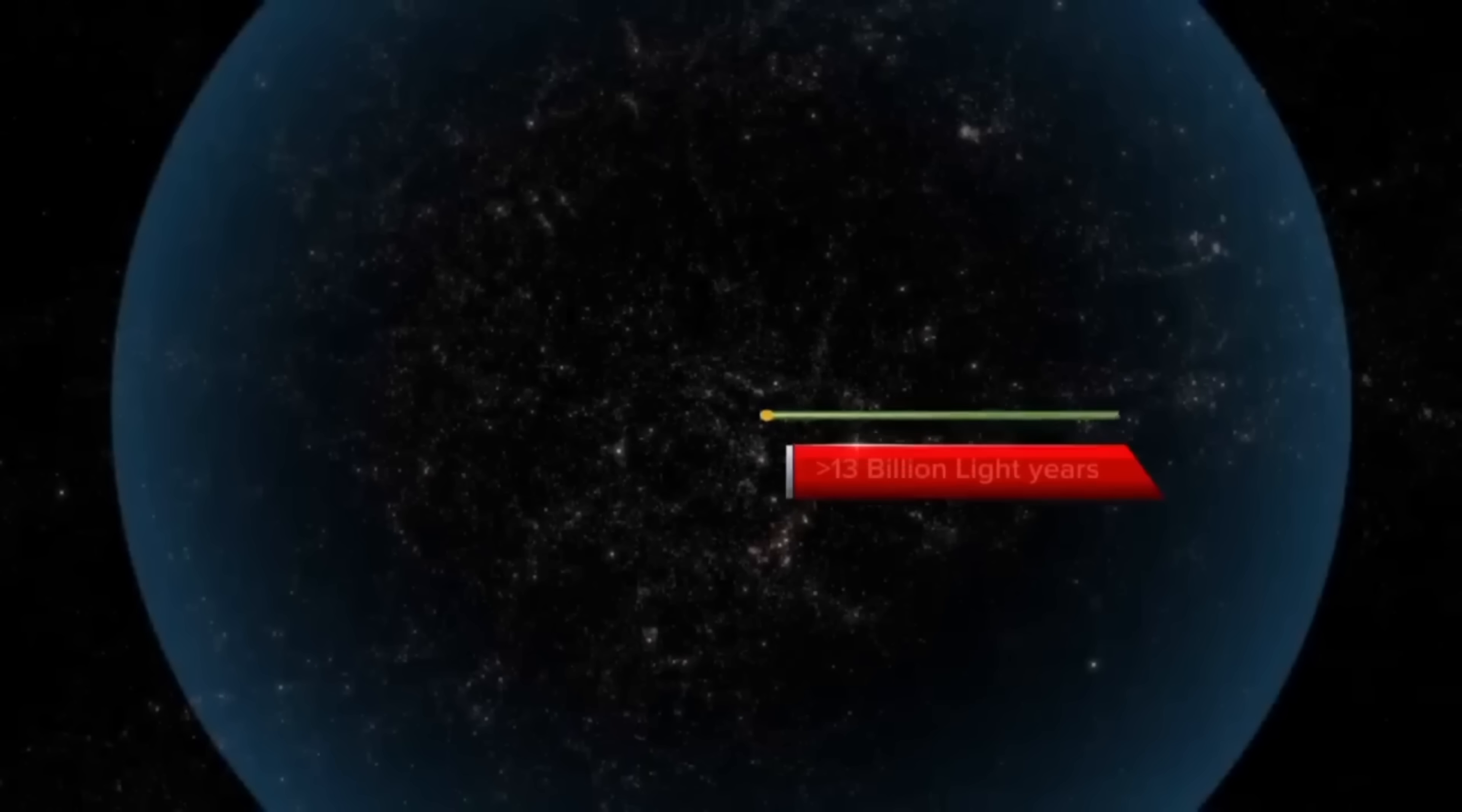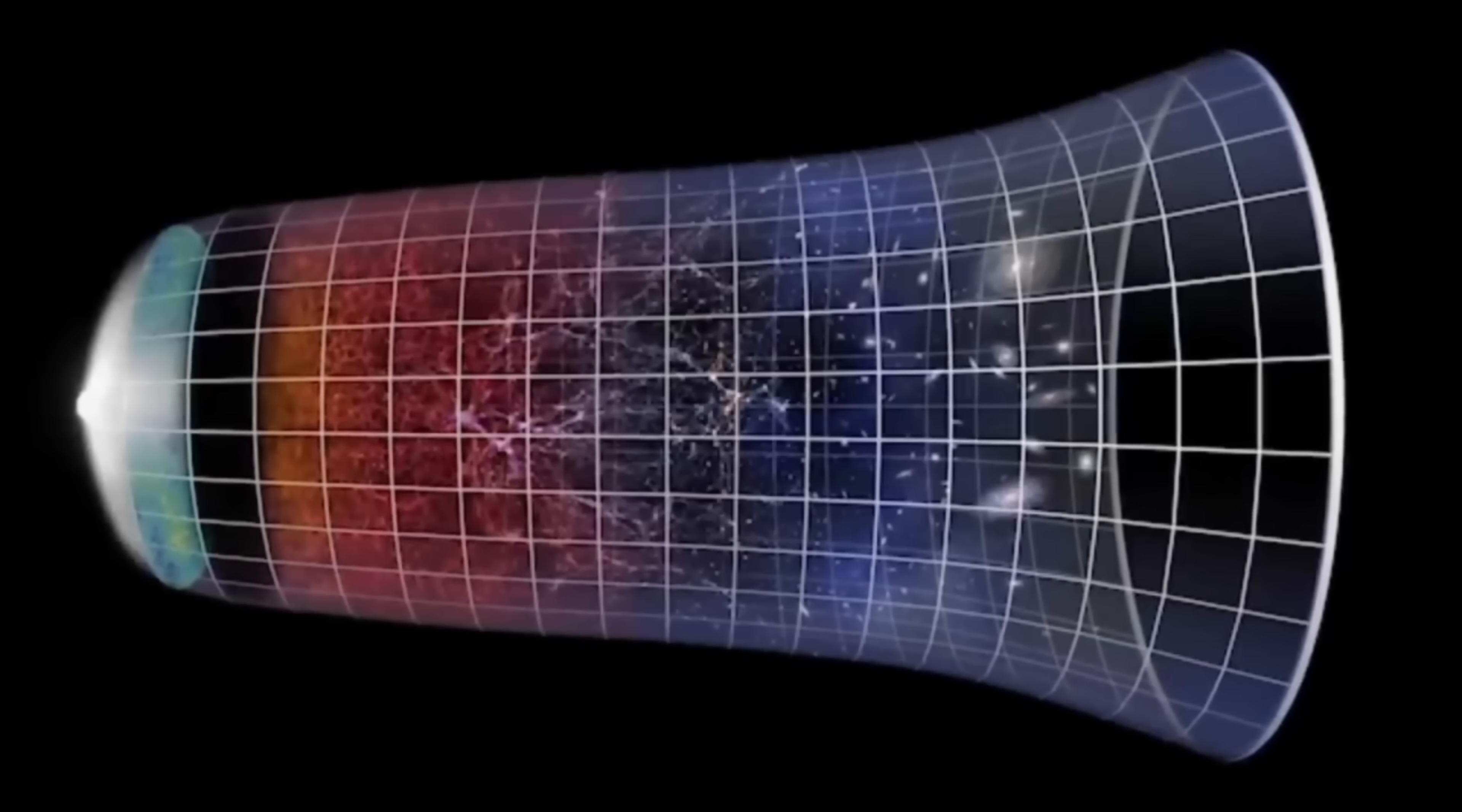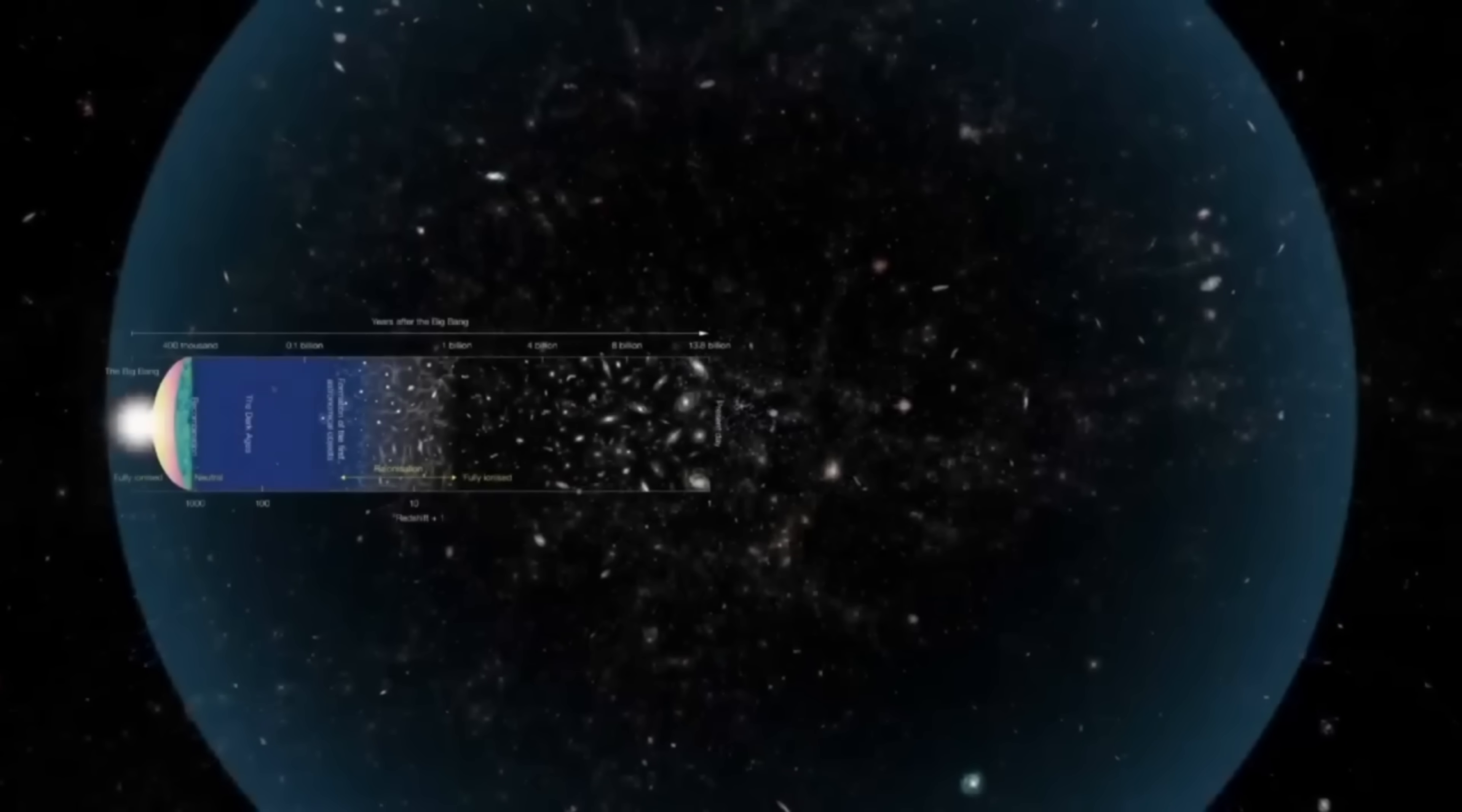So far, scientists have observed more than 13 billion light years into the early universe using powerful telescopes. With the help of these observations, scientists have created a standard model of our universe, which shows what the universe looked like at different time periods in the past.